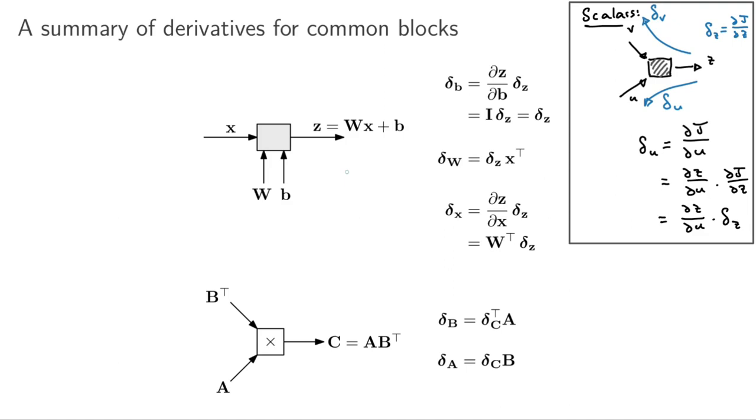For instance here, we've got a very common linear layer where we have some input x which is linearly transformed with that matrix W and a bias vector b to get the output Z. In this case, we assume we know what the error signal for Z is.